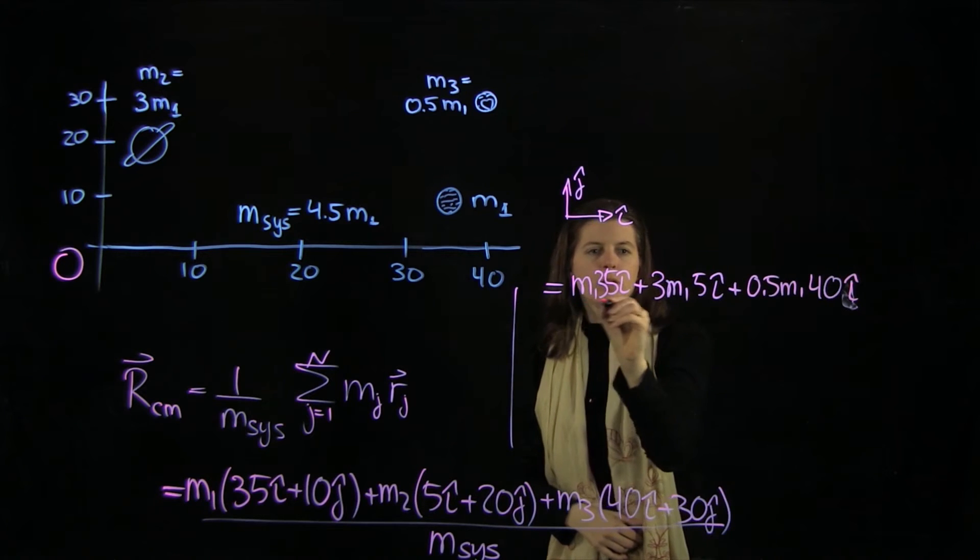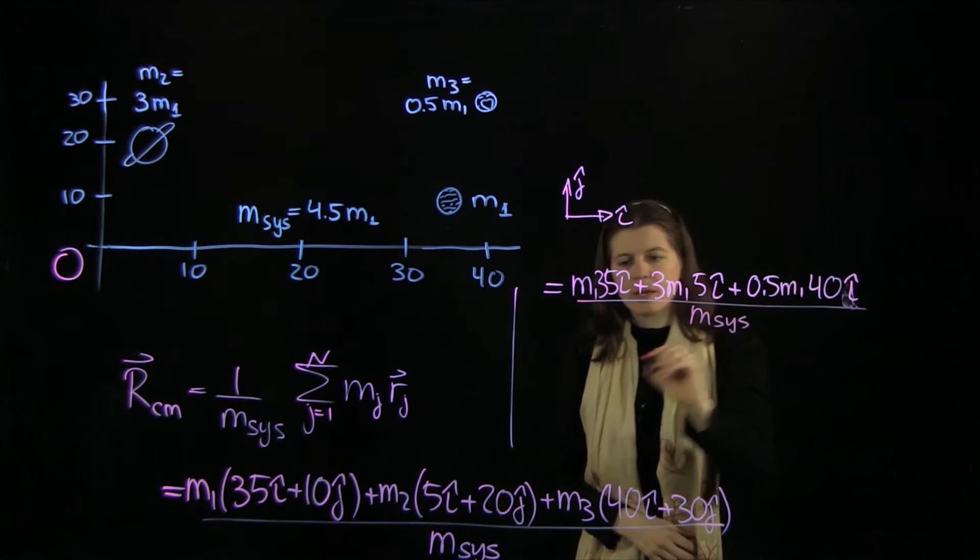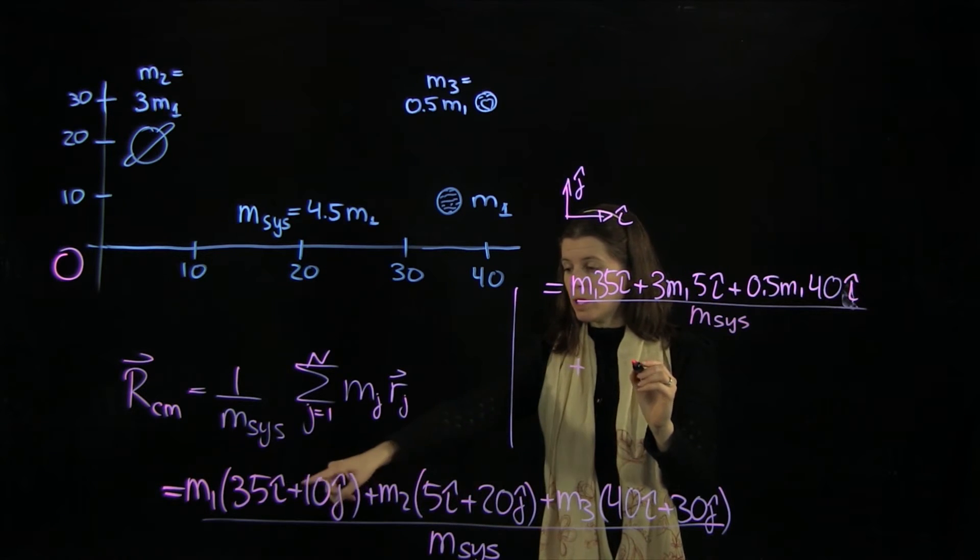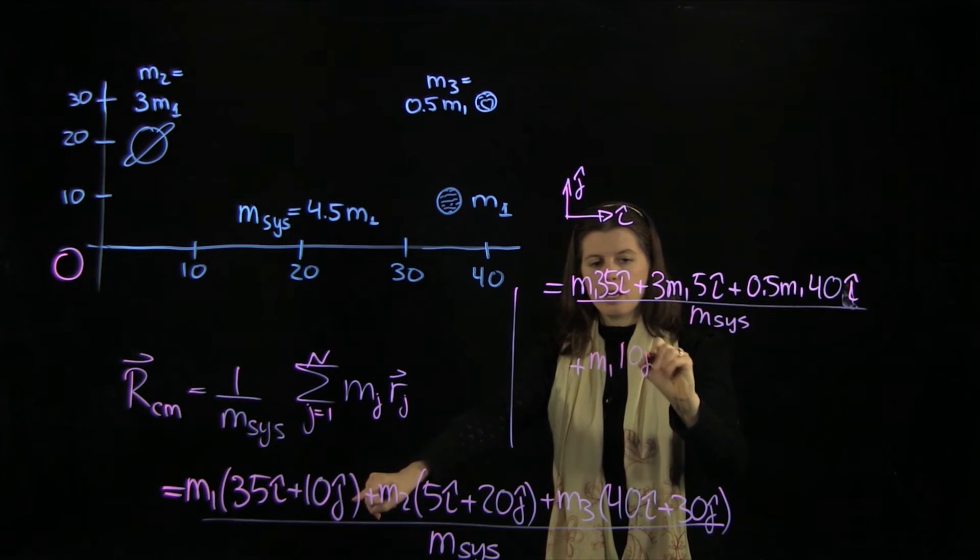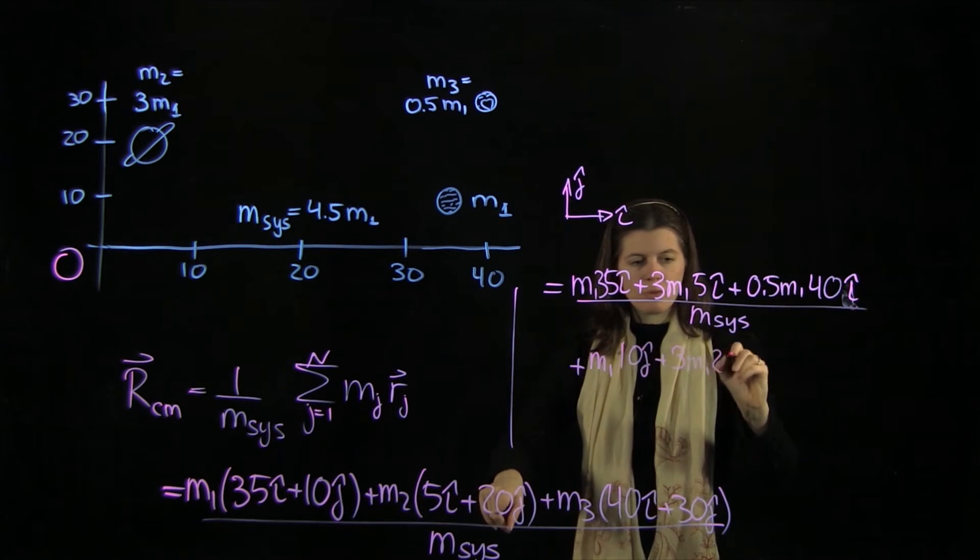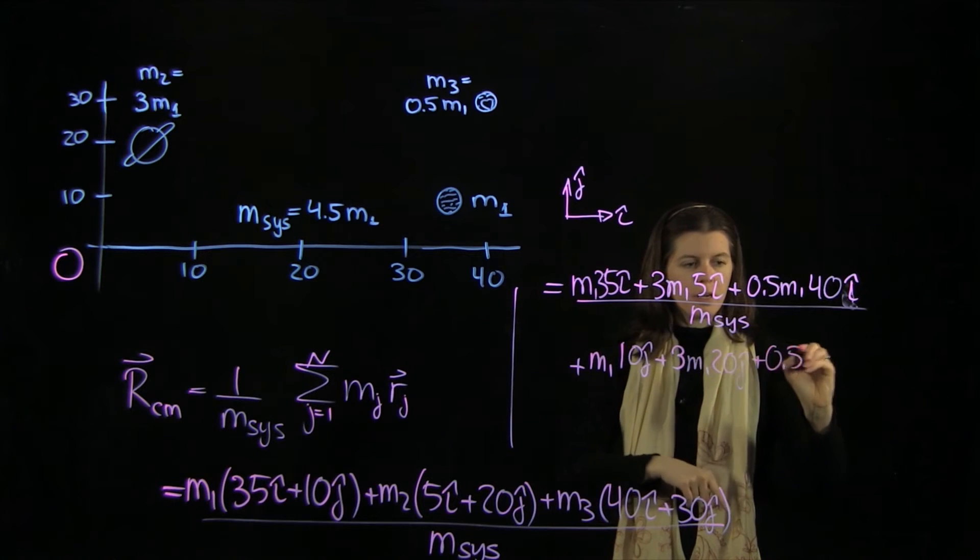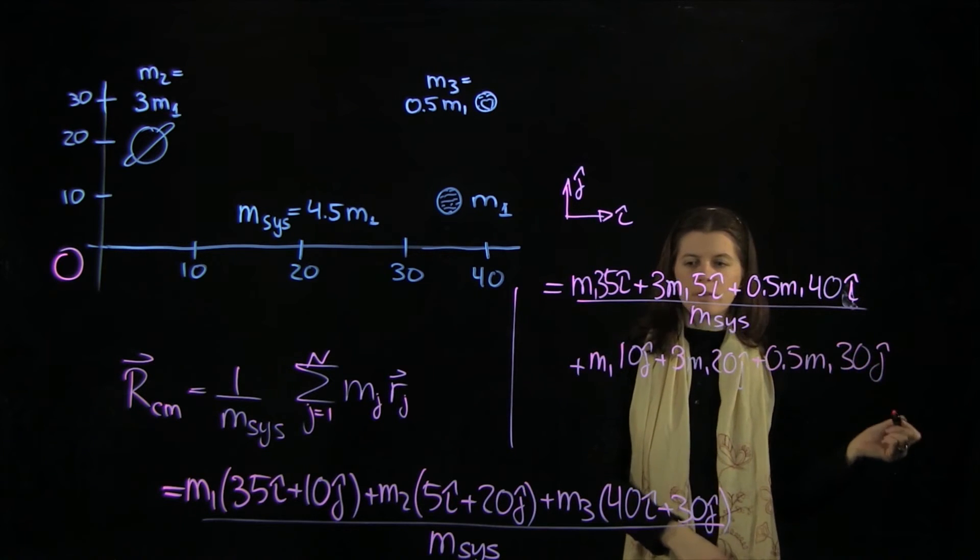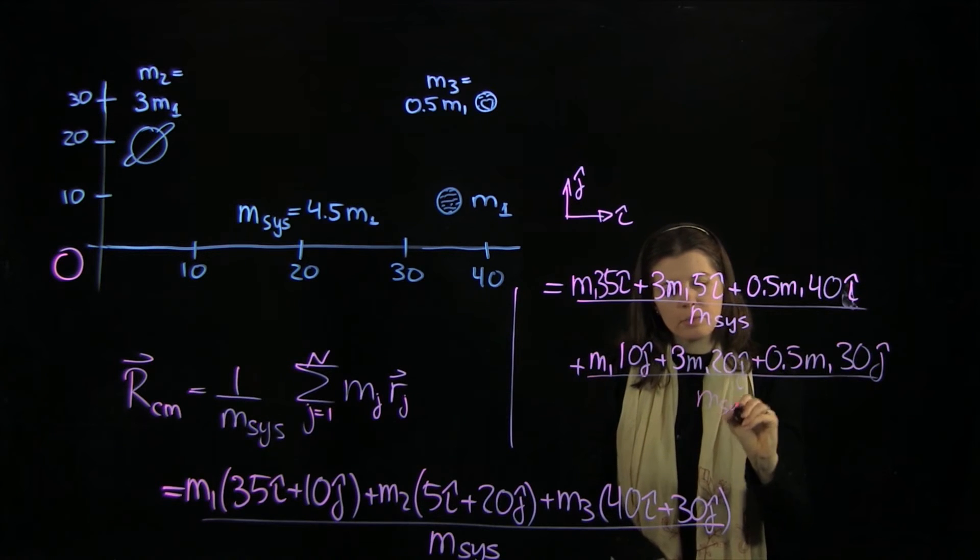And we'll have to divide that over our system mass. Then we do the same for the y-component: m1 times 10 plus 3 m1 times 20 plus 0.5 m1 times 30 j-hat. And again, we have to divide this over our system mass.